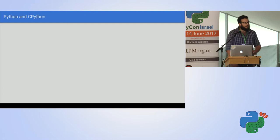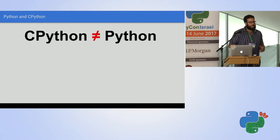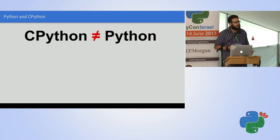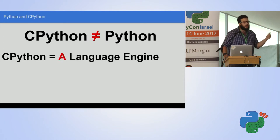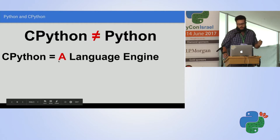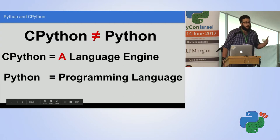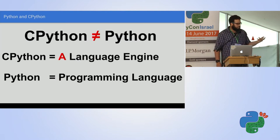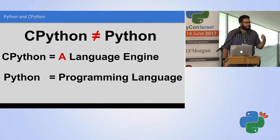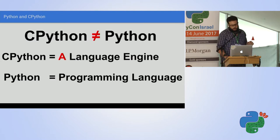Let's start with making a distinction: CPython is not Python. I hear people talk about Python and performance - those are two different things. Python is the language; CPython is an engine. There are several Python engines. Python is a programming language, a definition of language features, syntax, and PEPs.